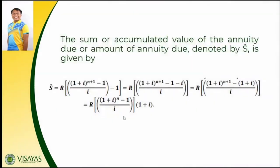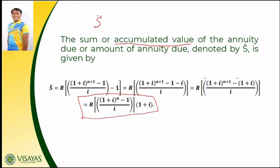The sum or accumulated value of the annuity due, denoted by this symbol, is the accumulated value of the annuity due or the amount of annuity due. Using the derivation of the formula from last time, this is equal to R times the quantity (1 plus i) raised to (N plus 1) minus 1 over i, minus 1. Doing the necessary operations, we arrive at the final formula for finding the accumulated value of the annuity due, which we are going to use later in our problem solving.